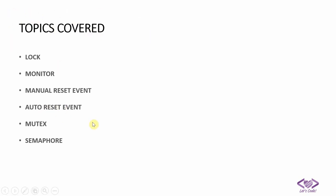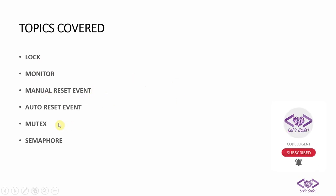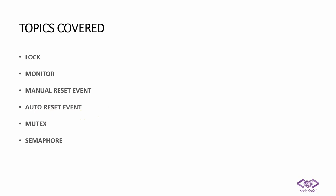In this video we covered all these topics: lock and monitor for synchronizing simple code blocks; manual reset event when you want all threads to wait while one special thread works and then signal all of them; auto reset event when you want threads signaled one at a time; mutex when you need only the locking thread to release the lock; and semaphore to control how many threads run in parallel. I hope this clears all topics of thread synchronization in C#. Thank you.